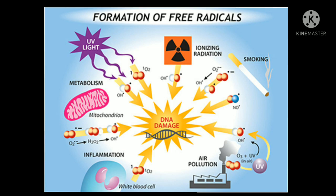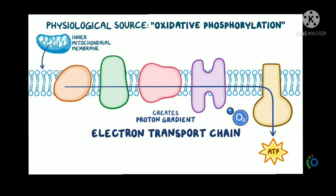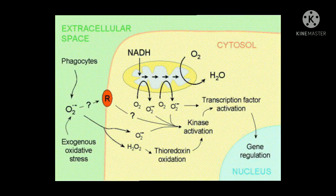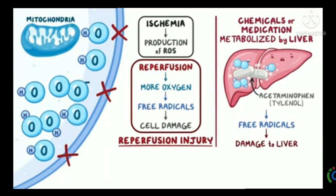Free radicals are produced in the body naturally as a byproduct of metabolism or by exposure to toxins in the environment. Enzymatic reactions that serve as a source of free radicals include those in the respiratory chain, in phagocytosis, in prostaglandin synthesis, cytochrome P450 system, inflammation, exercise, ischemia, etc. They also form in non-enzymatic reactions.